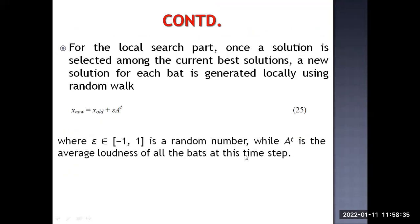For the local search part, once a solution is selected among the current best solutions, a new solution for each bat is generated locally using random walk. When the bat is coming closer to the prey, a new solution is generated as: x_new equals x_old plus epsilon times A(t), where epsilon is a random number between minus 1 and plus 1, and A(t) is the average loudness of all the bats at that time step.